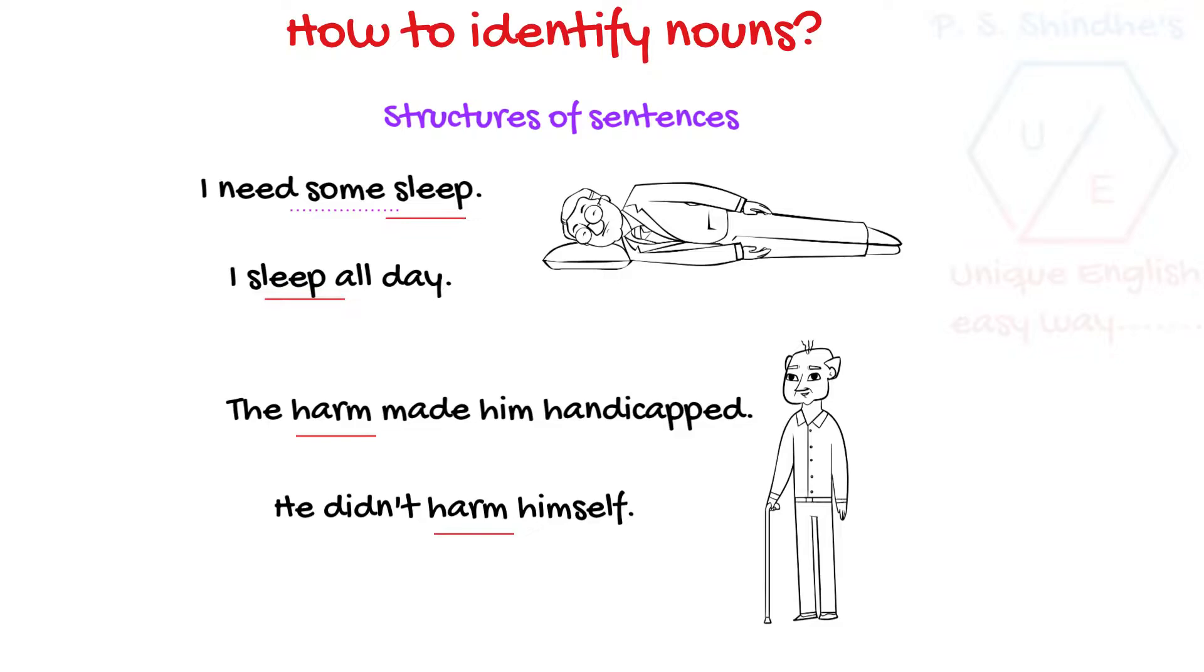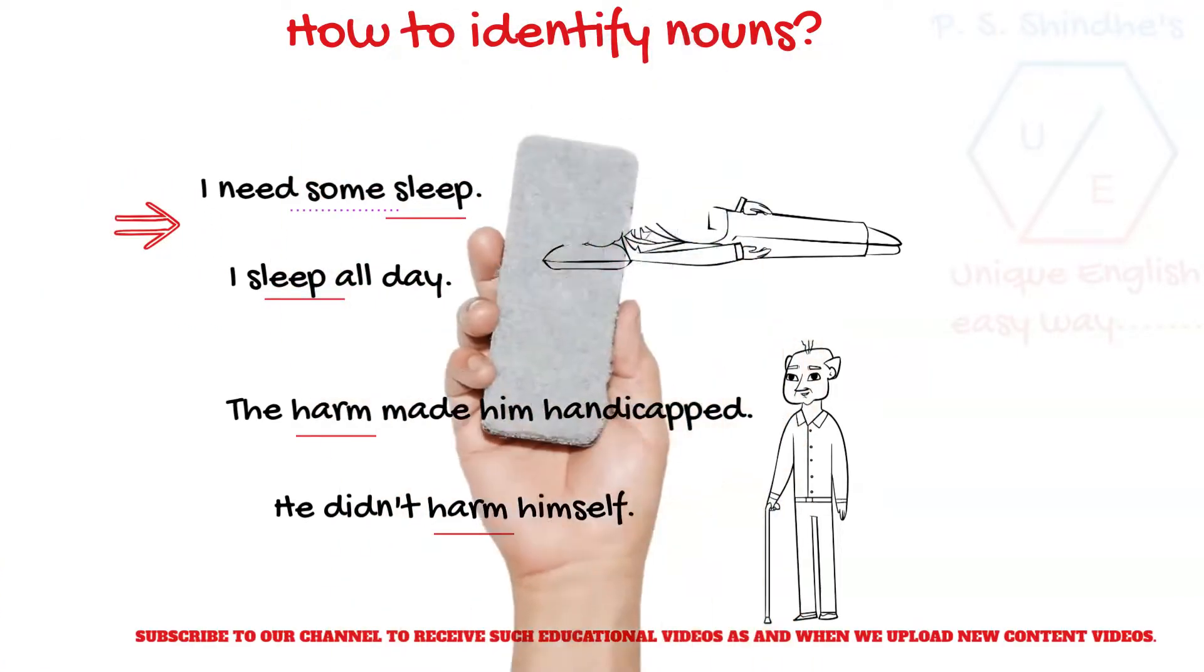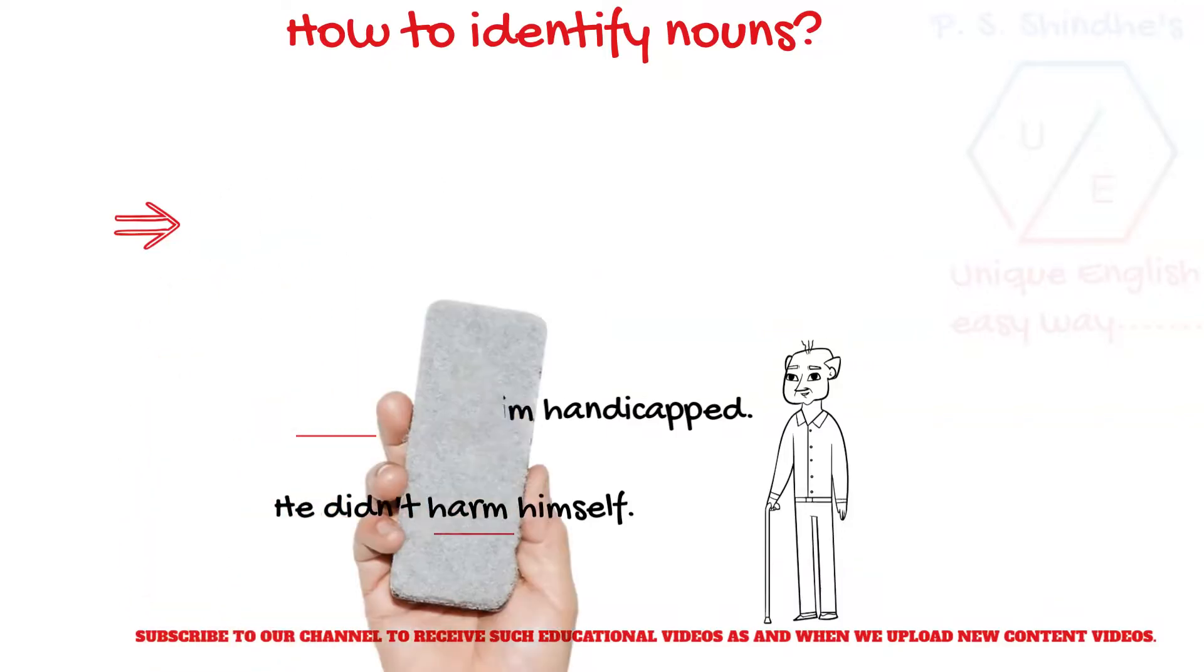In the latter sentence, sleep occurs after the subject pronoun I. Its placement occurs where we usually expect a verb in that place. Thus, such structural clues help us to identify nouns in sentences.